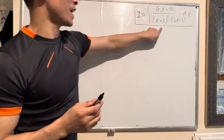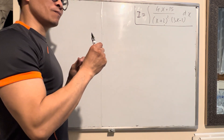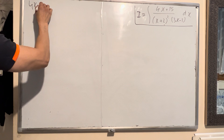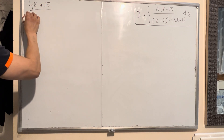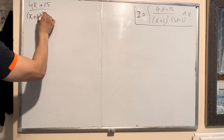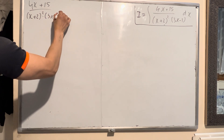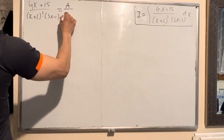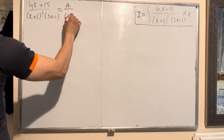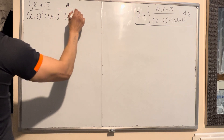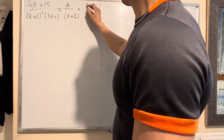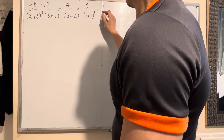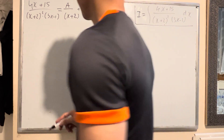You can do a repeat factor for symbols like that and make it become usable with the formula. Now rewrite: x plus 15 over x plus 2 squared times 3x minus 1. You can write 3 factors on the right hand side — A over x plus 2, plus B over x plus 2 squared, plus C over 3x minus 1. That we call a repeat factor.